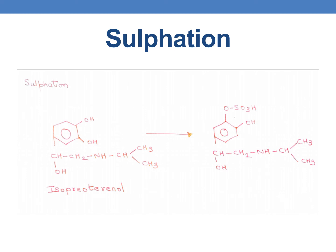As an example, isoproterenol undergoes sulfation. In the overall reaction, isoproterenol is a drug that undergoes sulfation especially at its OH group, where the OH group is substituted with a sulfate moiety.